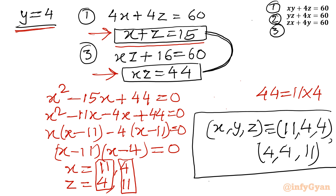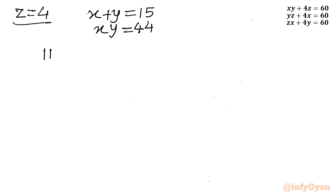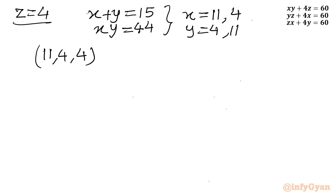Similarly, considering the second operation equation 2 minus equation 3, that conclusion was z equals 4. So if z equals 4, I can again frame two equations: x plus y equals 15 and x times y equals 44. Solving these we get x equals 11 and 4, giving solutions: x equals 11, y equals 4, z equals 4; and x equals 4, y equals 11, z equals 4.